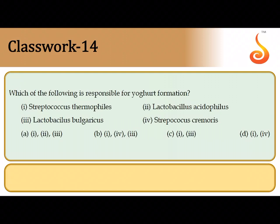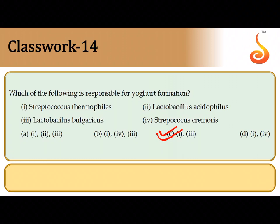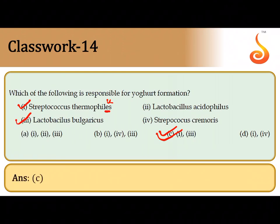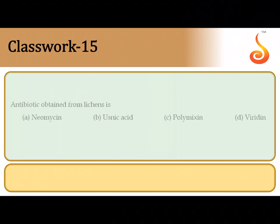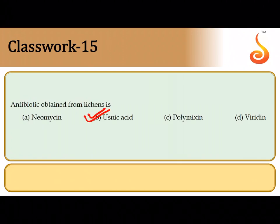The fourteenth question asks which organisms are responsible for yogurt formation. For yogurt, we routinely employ Streptococcus thermophilus and Lactobacillus bulgaricus. Note: it is thermophilus, not thermophiles. Lactobacillus bulgaricus are mostly employed in yogurt formation, so it is option C. The fifteenth question asks about an antibiotic obtained from lichen — the lichen Eusenia is the source of an antibiotic called eusenic acid, so the correct answer is option B.